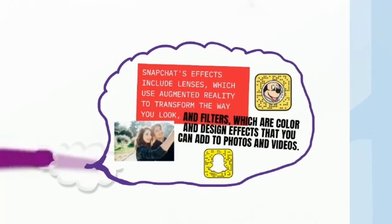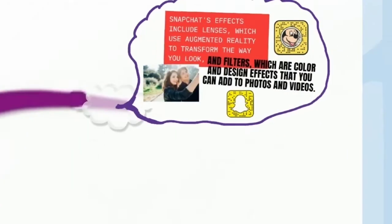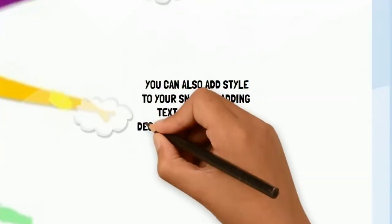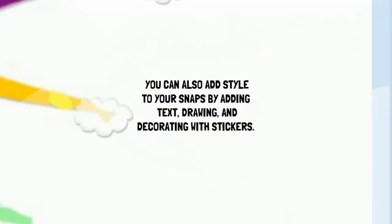Snapchat's effects include lenses, which use augmented reality to transform the way you look, and filters, which are color and design effects that you can add to photos and videos. You can also add style to your snaps by adding text, drawing, and decorating with stickers.